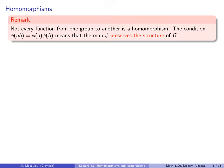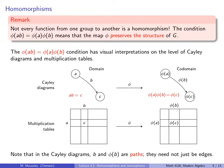Here is a very important remark: not every function from one group to another is indeed a homomorphism. The condition that phi(AB) = phi(A) · phi(B) means that the map phi preserves the structure of G. It should not be obvious why this is true — this is what I hope to convince you of in the next few slides.